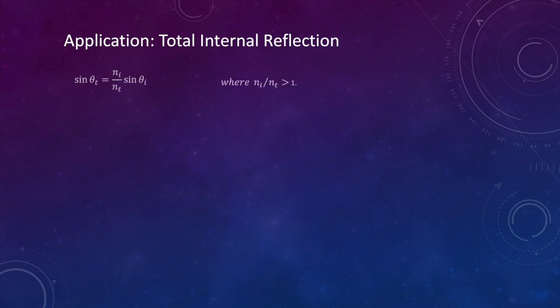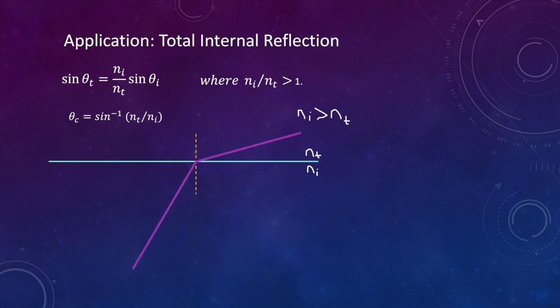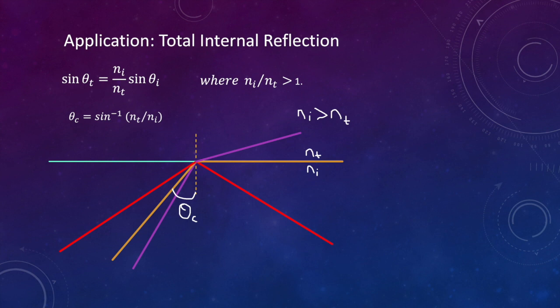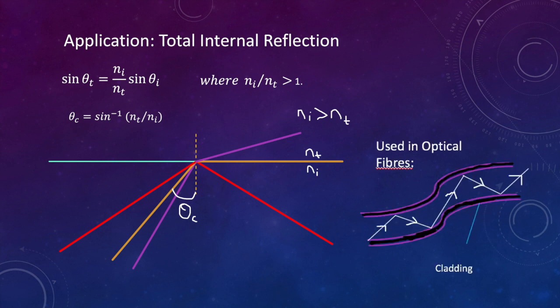We will now consider a light ray which travels from a medium of higher to lower refractive index. It bends away from the normal, and if we keep increasing the angle of incidence, we observe that for a particular angle called the critical angle, the light is refracted along the boundary. And for any angle greater than this, we observe that all of the light is reflected back with zero transmission. This phenomenon is used in many modern-day equipment such as optical fibres. In an optical fibre, the outer layer called cladding has a lower refractive index than the core and allows light to stay inside the fibre and not escape into the cladding. This plays a huge role in transmitting information using optical light, and therefore it has many applications.